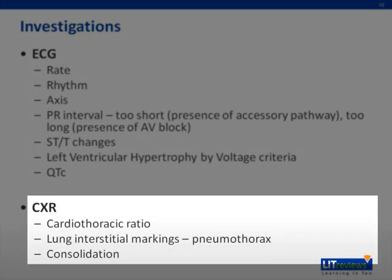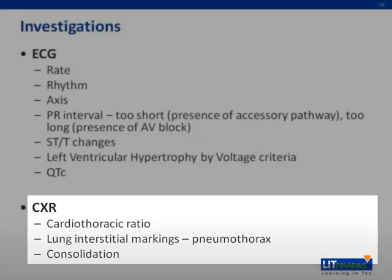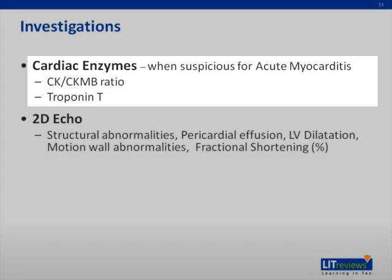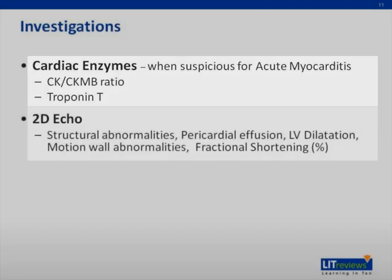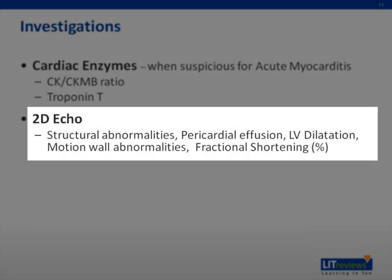On the chest x-ray, look for the cardiothoracic ratio and follow through the lung interstitial markings to make sure there is no pneumothorax. Cardiac enzymes should be done whenever you suspect acute myocarditis. Cardiology referral for 2D echo should be done if there are red flags on history and physical examination. 2D echo is useful to rule out structural abnormalities, wall motion abnormalities, to assess cardiac function, and to look for the presence of any pericardial effusion.